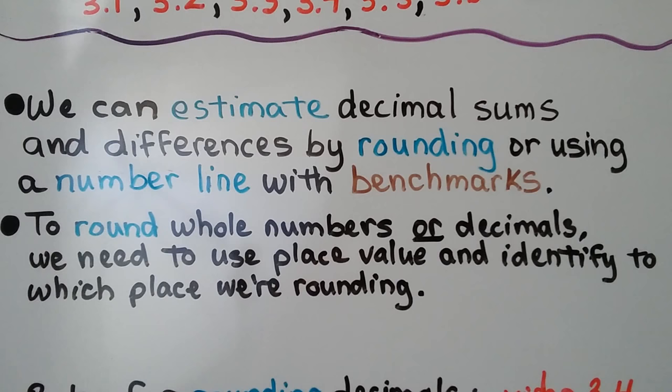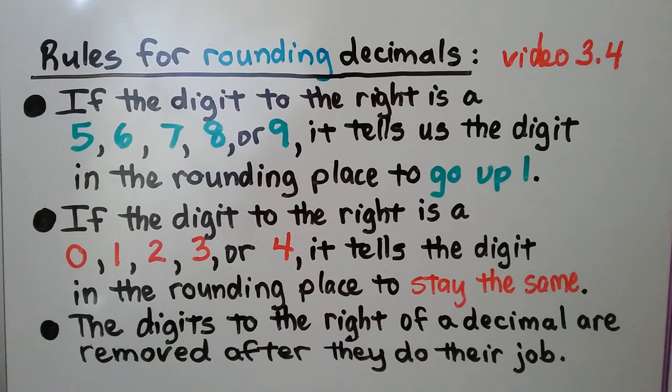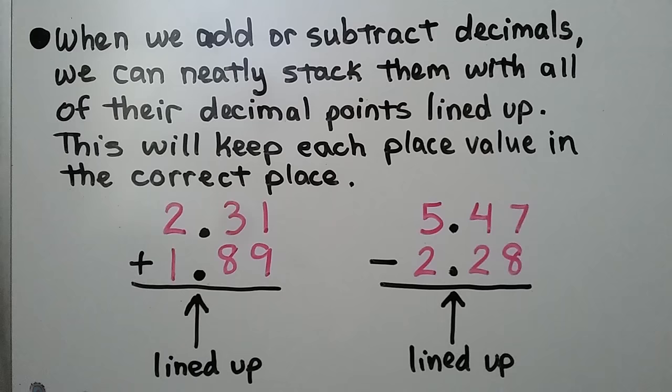To round whole numbers or decimals, we need to use place value and identify to which place we're rounding. We first learned the rules for rounding decimals in video 3.4. If the digit to the right is a 5, 6, 7, 8, or 9, it tells the digit in the rounding place to go up 1. If the digit to the right is a 0, 1, 2, 3, or 4, it tells the digit in the rounding place to stay the same. The digits to the right of a decimal are removed after they do their job.